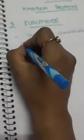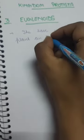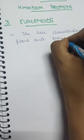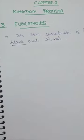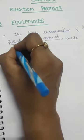Euglenoids, as the name suggests, include euglena. These euglena have the characteristics of both plants and animals. They can undergo photosynthesis and also move like animals. So the main thing about euglenoids is that they have characteristics of both plants and animals — they are mobile and they also perform photosynthesis.